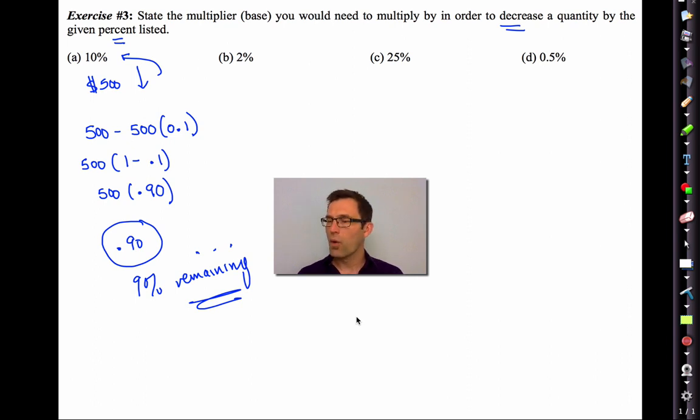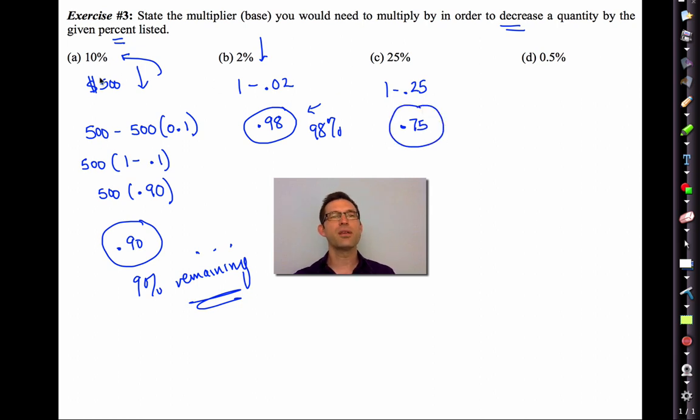Now, if you think you have the idea, pause the video now and do letter B, C, and D. All right, let's go through them. Well, for letter B, again, we're going to multiply by 1 minus the percent in decimal form, 1 minus 0.02. We're going to multiply by 0.98 because if we decrease by 2%, we have 98% remaining. If we decrease by 25%, we're going to have 75% remaining. That's pretty easy, all three of those, because they're whole number percents. Take a look at this. Often percents that we work with are very small, 0.5%, not 5%, 0.5. So that would be 1 minus 0.005 or 0.995.